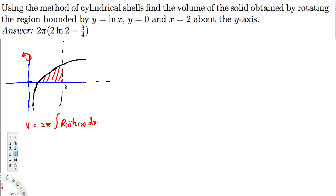When rotating around the y-axis, we draw a rectangle with height parallel to the y-axis. We'll have a rectangle like this, and the radius is the distance from the rotating axis to the rectangle. Since x is the distance from 0 to this rectangle, these two are the same, so r = x.